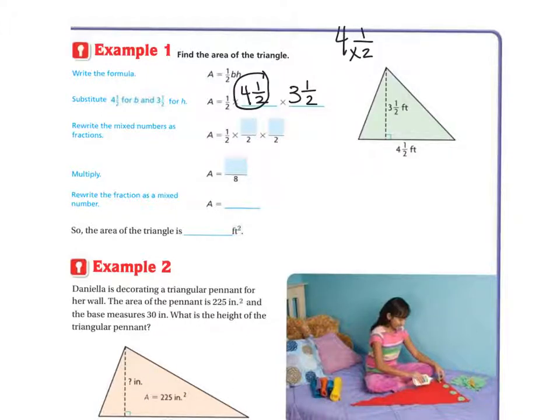I multiply the 4 and the 2, and then I add the 1. 4 times 2 is 8, plus the 1 is 9. So it's going to be 9 over 2. And then let's do this next one, 3 and 1 half. So I multiply the 3 times the 2, which is 6. Then I add the 1, which is 7. So I'm going to get 7 over 2.